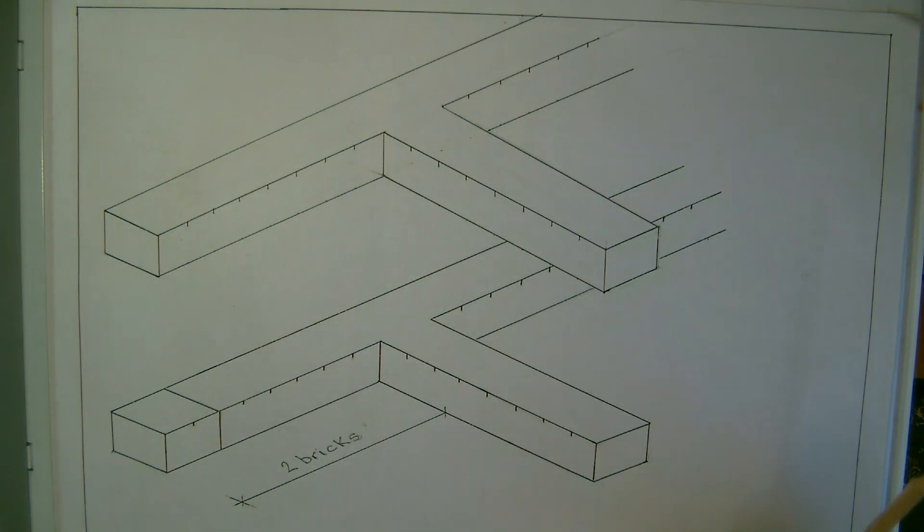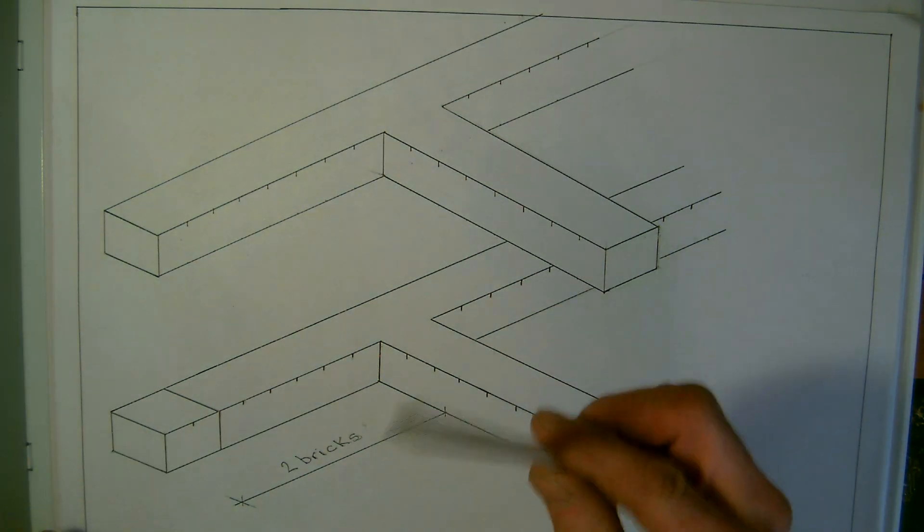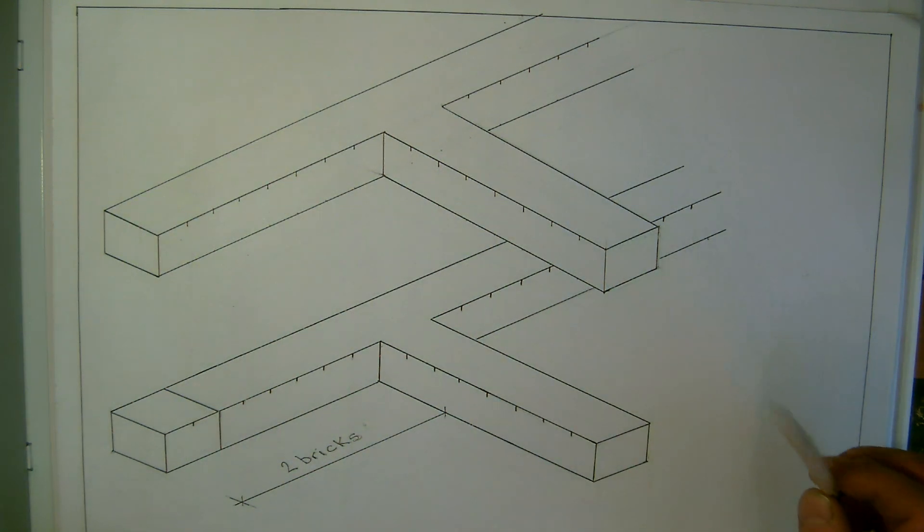Now we don't know which way around this goes at the moment, and this is why dry bond or just setting it out with a pencil - don't do this with a pen to start with.